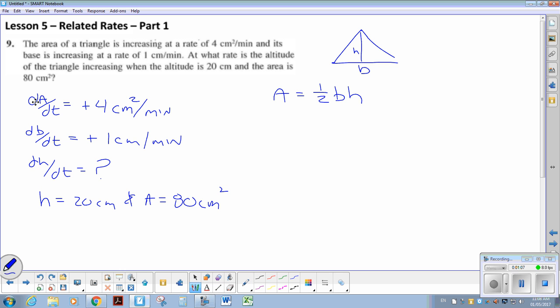So I'm going to take the derivative as is. The derivative here would be dA by dt equals one-half, derivative of b is 1, dB by dt times h, plus its product rule, one-half b, derivative of h is 1, dH by dt.